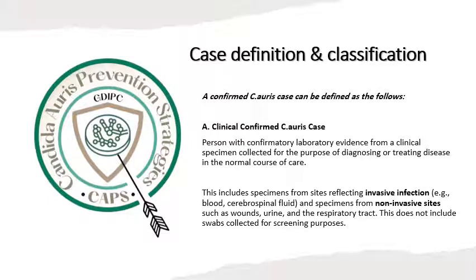A confirmed Candida Auris case can be defined as follows. A: Clinical confirmed Candida Auris case, which is a person with confirmatory laboratory evidence from a clinical specimen collected for the purpose of diagnosing or treating disease in the normal course of care. This includes specimens reflecting invasive infection like blood or cerebrospinal fluid, and specimens from non-invasive sites such as wound, urine, and respiratory tract. This does not include swabs collected for screening purposes.